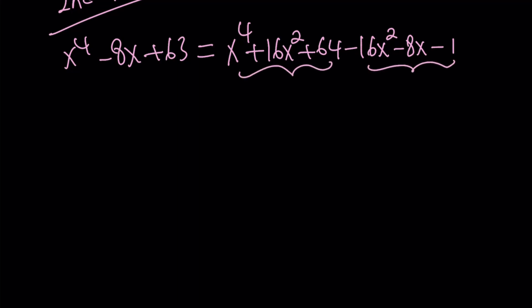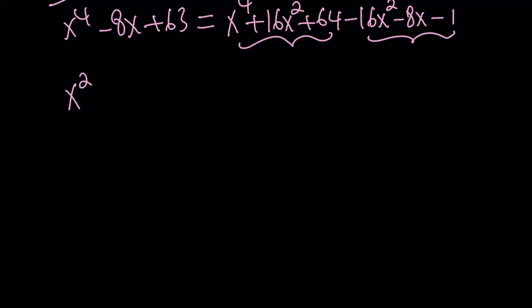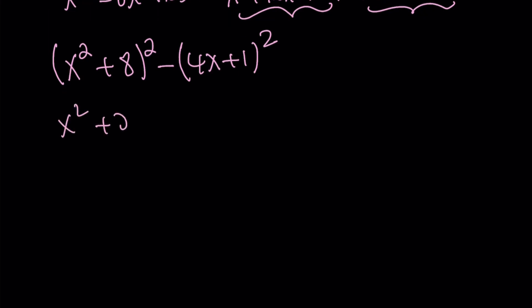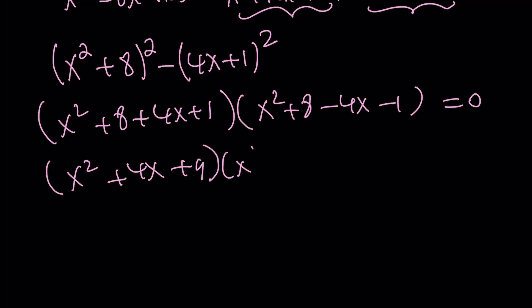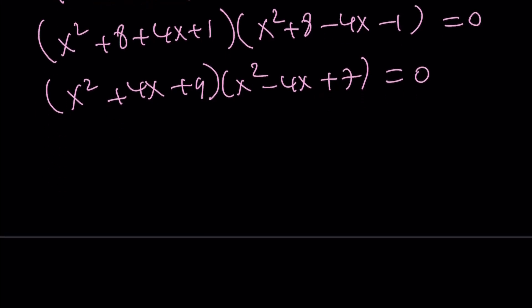And guess what? Both of these become perfect squares. Let's go ahead and write the result. The first one becomes x squared plus 8 quantity squared. And the second one just becomes 4x plus 1 quantity squared. And this is difference of two squares. Isn't that awesome? We can go ahead and factor it. x squared plus 8 plus 4x plus 1, that is multiplied by x squared plus 8 minus 4x minus 1 equals 0. And from here, we get x squared plus 4x plus 9 and x squared minus 4x plus 7. The product is equal to 0. By setting each of these equal to 0, we get the solutions as before. And x values are going to be 2 plus minus root 3i and x equals negative 2 plus minus root 5i by way of factoring.